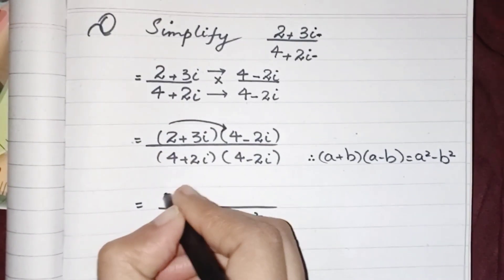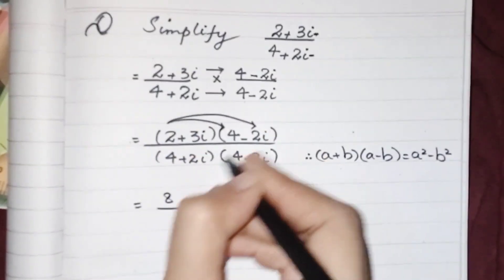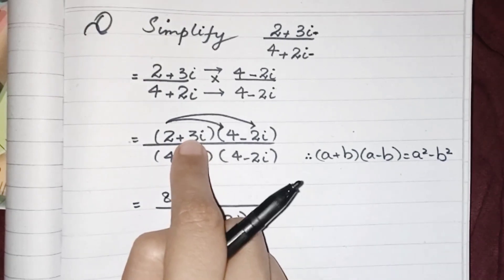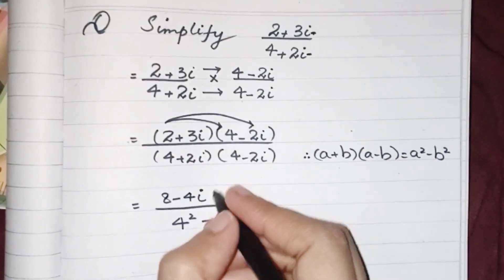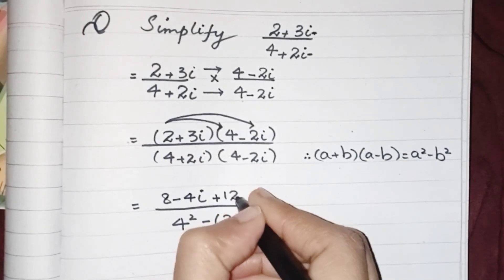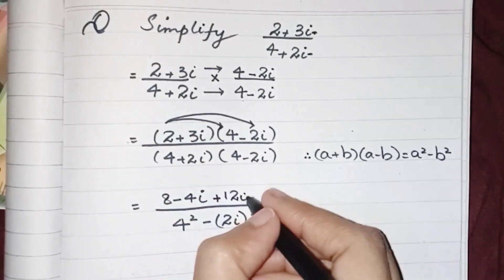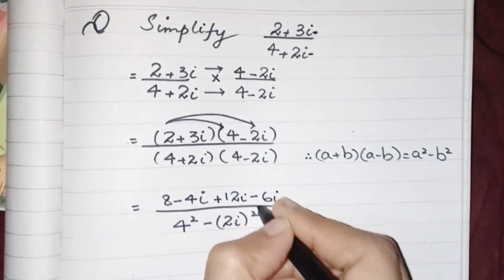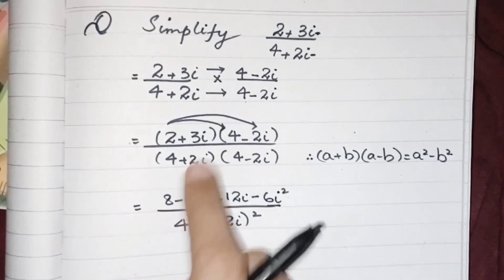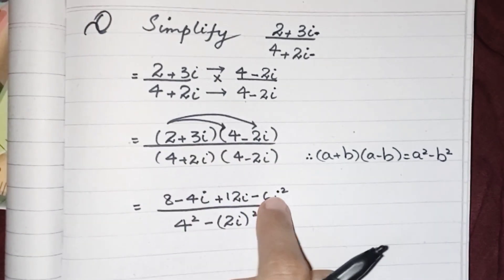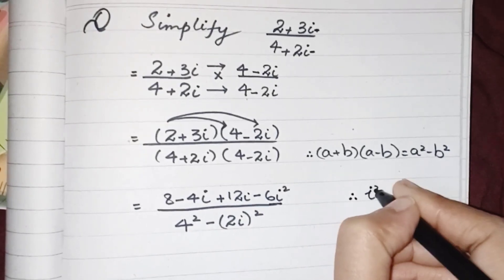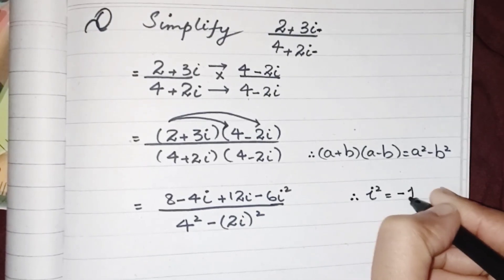So we can write it like 4 squared minus 2i squared, where this 2 will be multiplied by 4, which will result as 8. 2 multiplied by minus 2i will result as minus 4i. 3 multiplied by 4 will result as 12i. 3 multiplied by minus 2i gives us minus 6i squared.